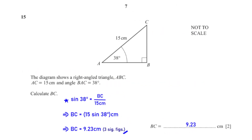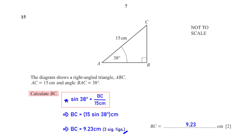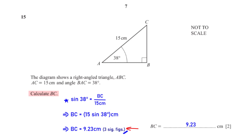The diagram shows right-angle triangle ABC. AC is 15 centimeters and angle BAC is 38 degrees. Calculate BC. Applying SOH-CAH-TOA: sin(38°) = BC / 15 cm. When we make BC the subject and type this into the calculator, we get 9.23 centimeters, rounded to three significant figures.